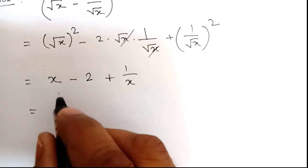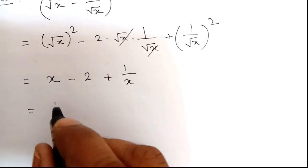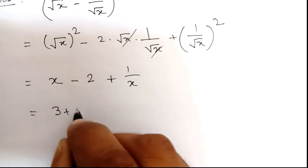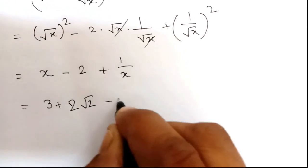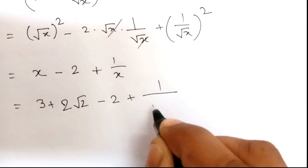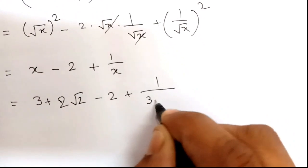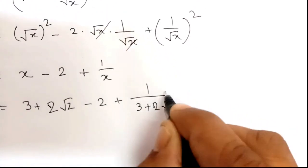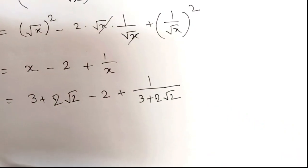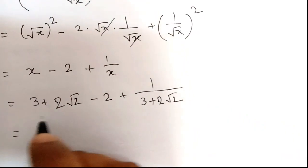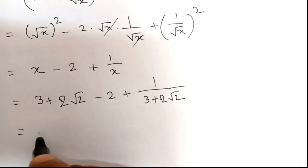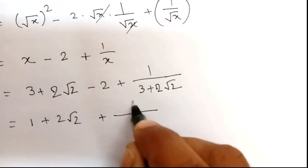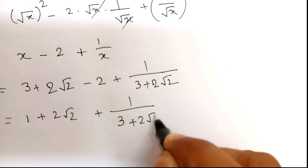The value of x is already given as 3 plus 2 root 2. So this becomes 3 plus 2 root 2, minus 2, plus 1 divided by 3 plus 2 root 2. Simplifying, 3 minus 2 will be 1, giving us 1 plus 2 root 2 plus 1 by 3 plus 2 root 2.